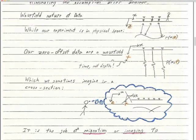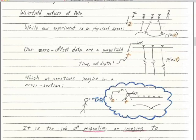I need to explain something about seismic sections. Our experiments are in physical space — here's a reflector in X and Z with depth points displaced from midpoints. But we record our zero offset data, our chirp data, as a wave field in time, not depth. Marine data is really a recording of pressure at each hydrophone. Pressure is a scalar, so we don't have to worry about vector wave fields. We're looking at a scalar wave field of pressure varying in X — the distance along our 2D line — and then time.